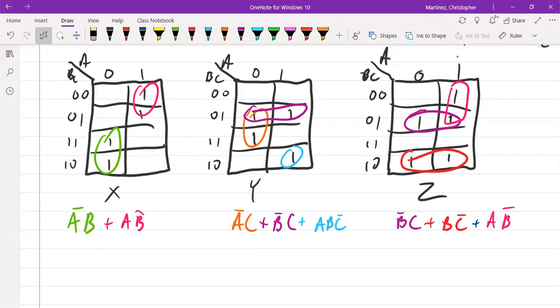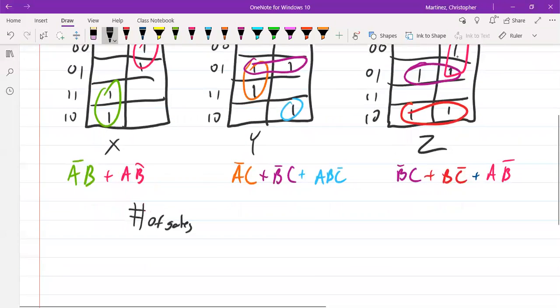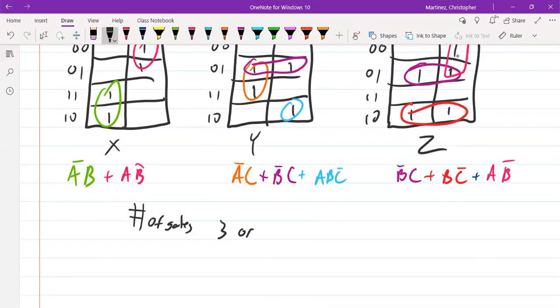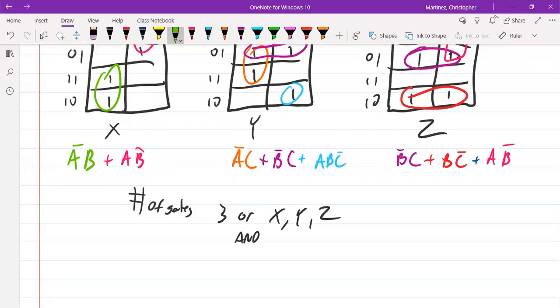Let's look at everything that we would need to create. How many gates do I need in this circuit? Each X, Y, and Z needs an OR gate, so I need three OR gates. And then AND gates I'm gonna need. How many different AND gates do I need? I need one for every color that I have here. So I need this green A bar B, I need the pink A B bar, I need the orange A bar C, I need the purple B bar C.